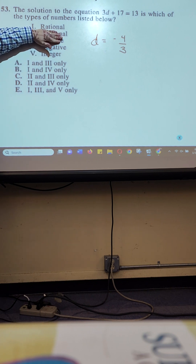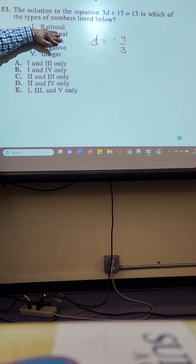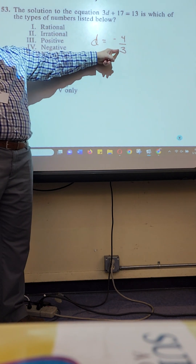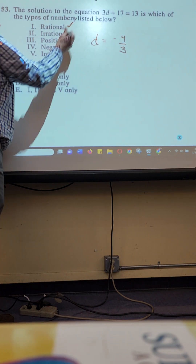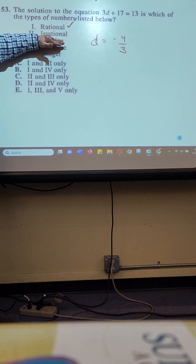What does the word rational mean? This is a great problem because nobody knew it last hour and nobody knows it this hour. Rational means it can be written as a fraction. Rational can be written like a fraction. Can a fraction be written like a fraction? So I know it's rational. Irrational means it cannot be written as a fraction.